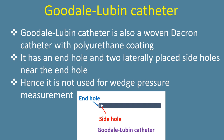Another woven dacron catheter with polyurethane coating has an end hole and two laterally placed side holes near the end hole. Because of the side holes, it is not used for wedge pressure measurement.